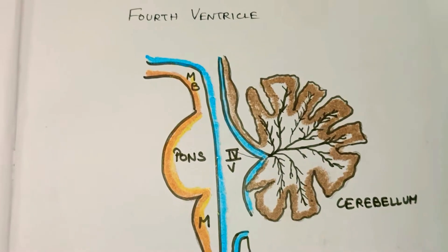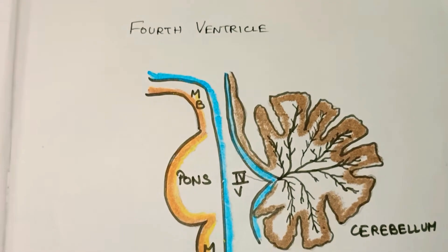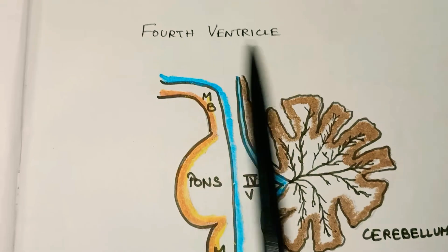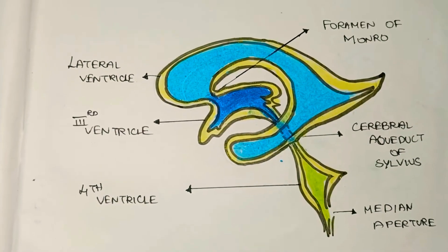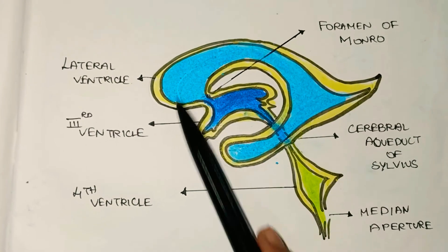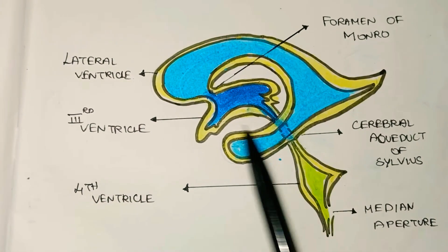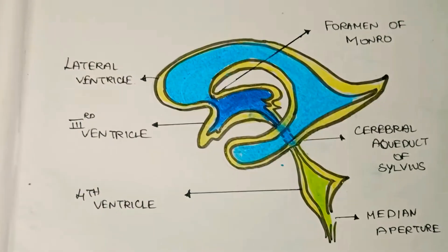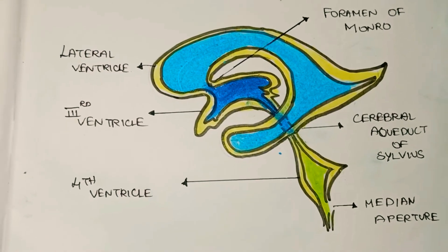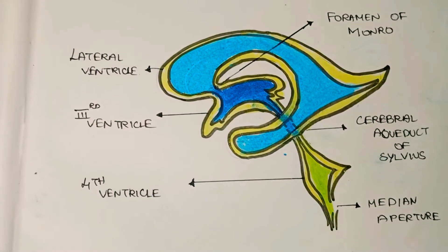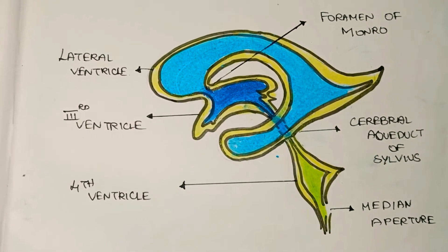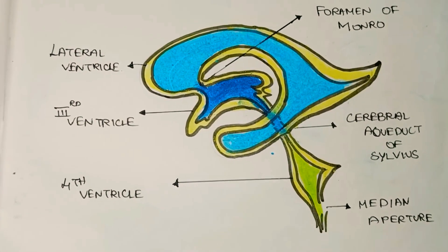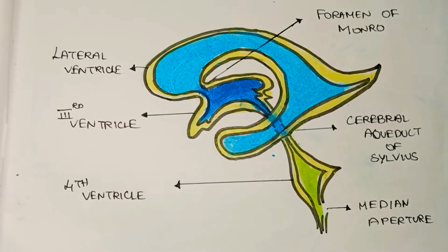Welcome to MBBS Tamil. Now we are going to talk about the topic of the 4th ventricle and the ventricular system of the brain. The ventricle function is the production and storage of the CSF. There are 4 ventricles.